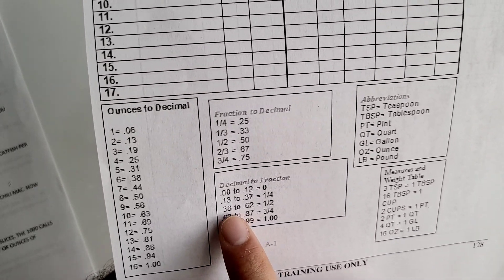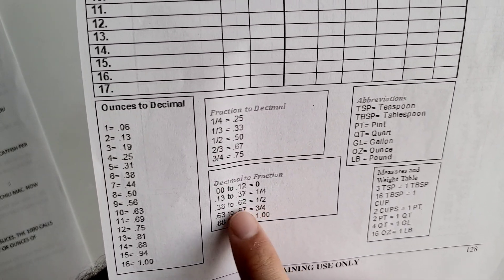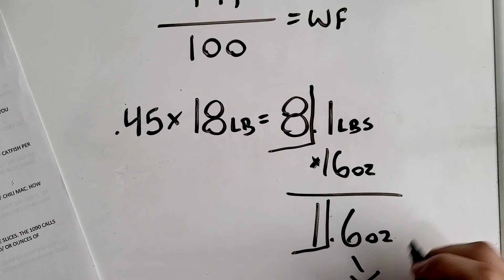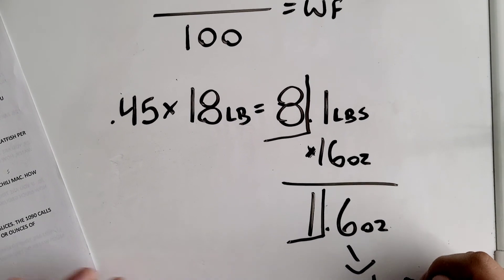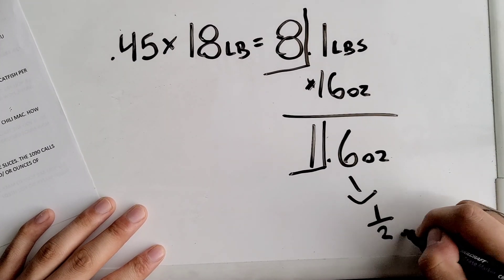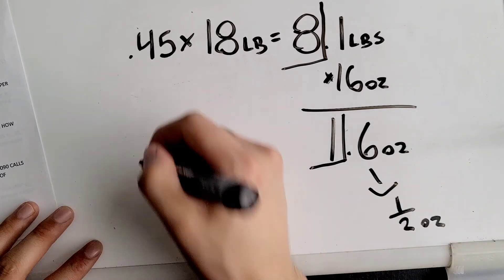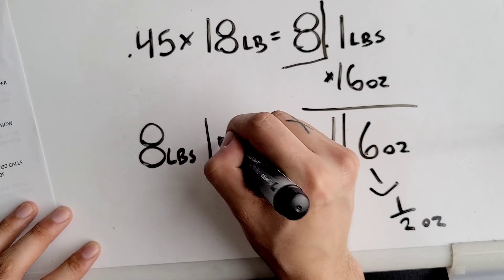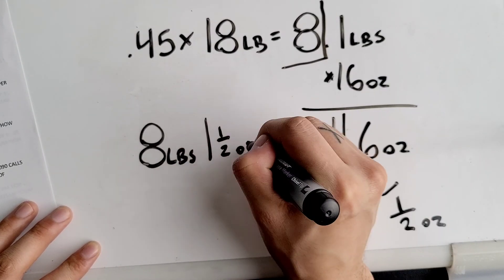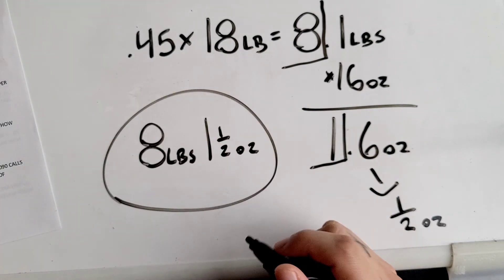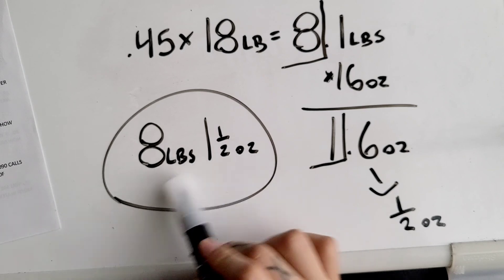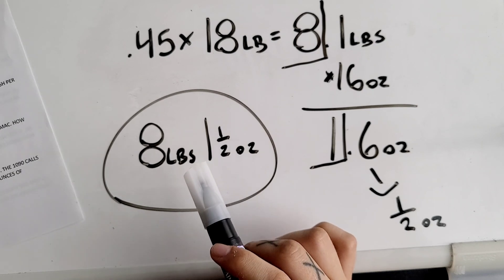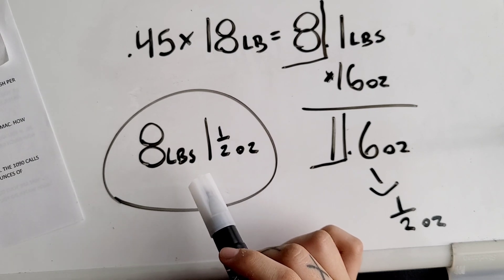So 0.60 — not 0.06 — falls right here at one-half. So 0.6 is the same thing as half an ounce. Your final answer is eight pounds and one and a half ounces. With this amount of ground beef you can make your 45 portions of chili mac.